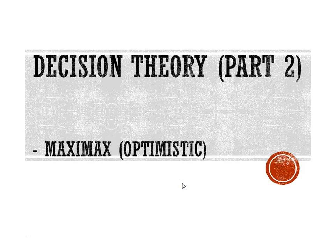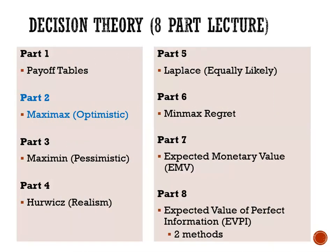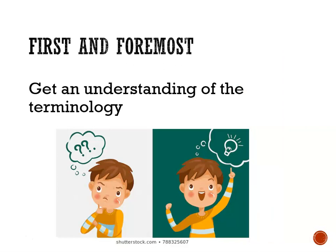Welcome back everyone. We're on part two of our eight-part lecture on decision theory. We're looking at Maximax, otherwise called the optimistic criteria. In part one we looked at payoff tables, and now we're on to part two.